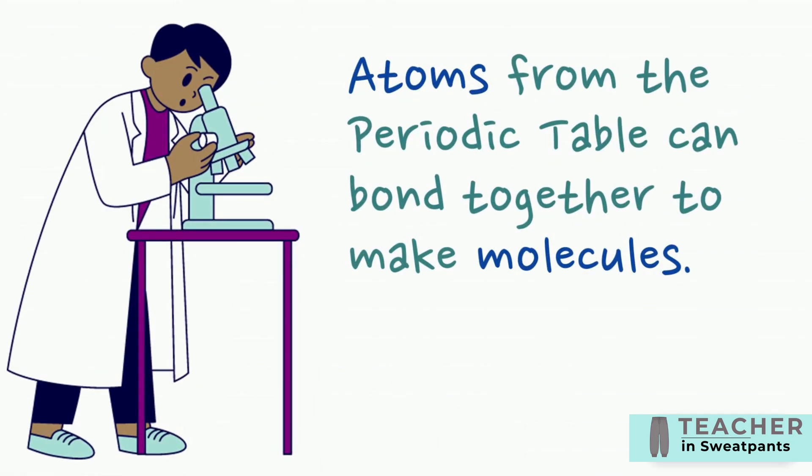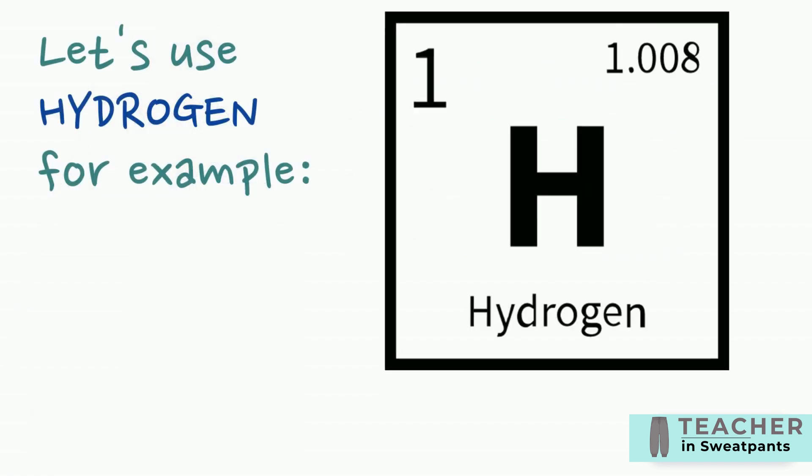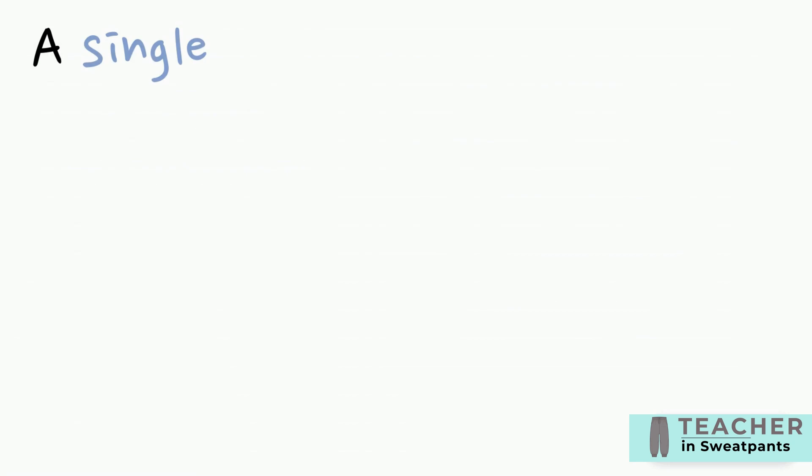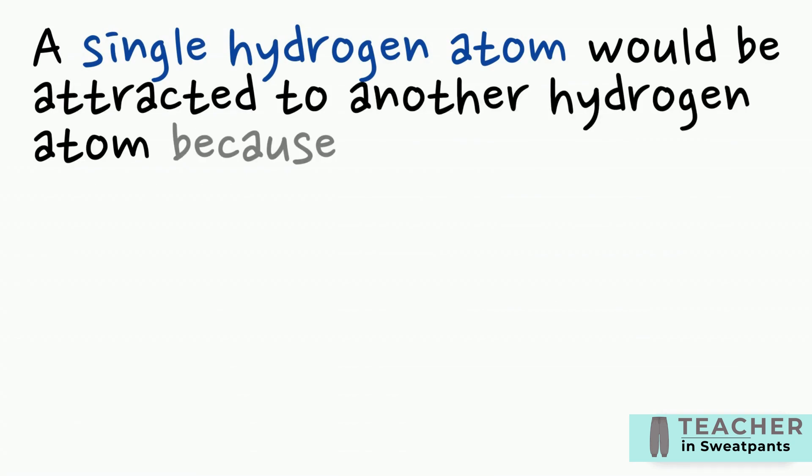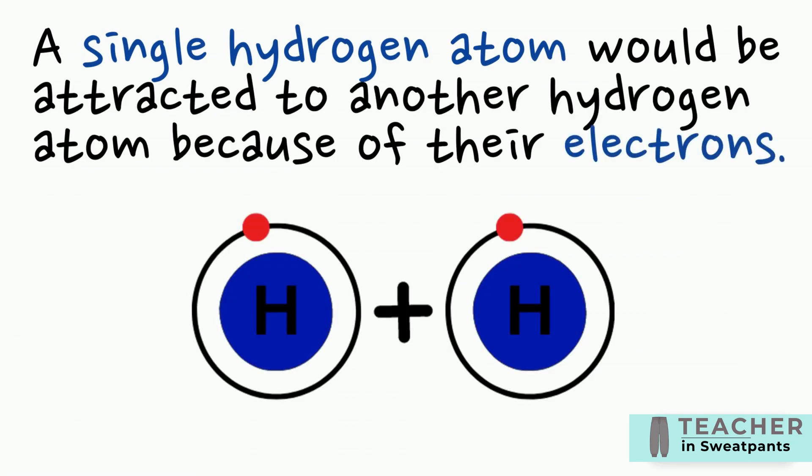Atoms from the periodic table can bond together to make molecules. Let's use hydrogen for example. A single hydrogen atom would be attracted to another hydrogen atom because of their electrons.